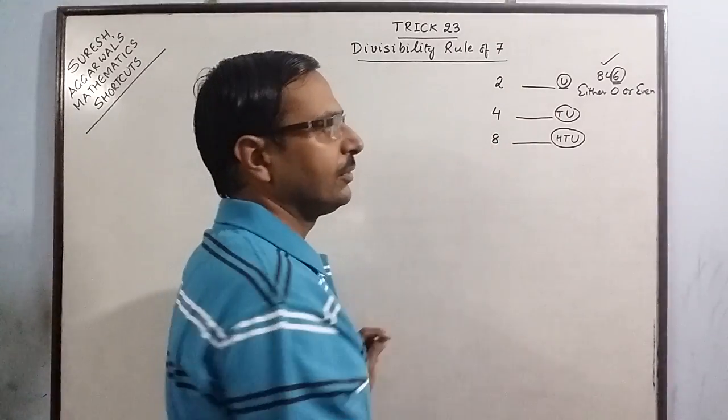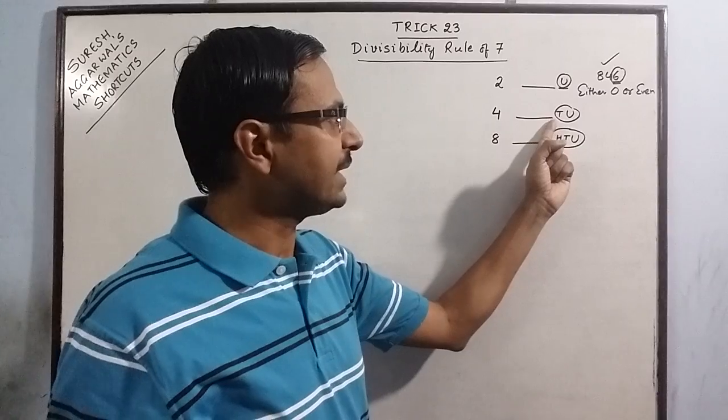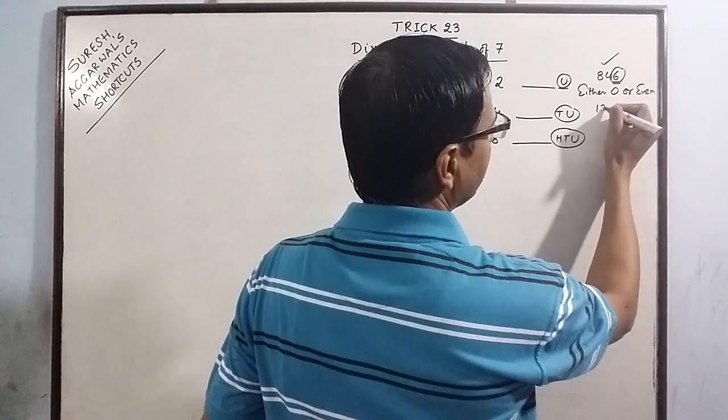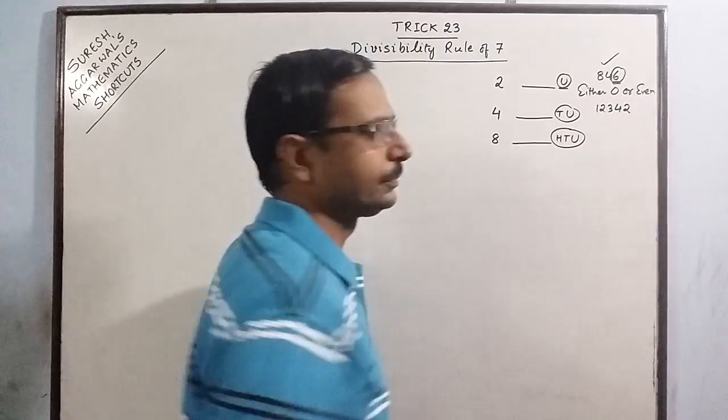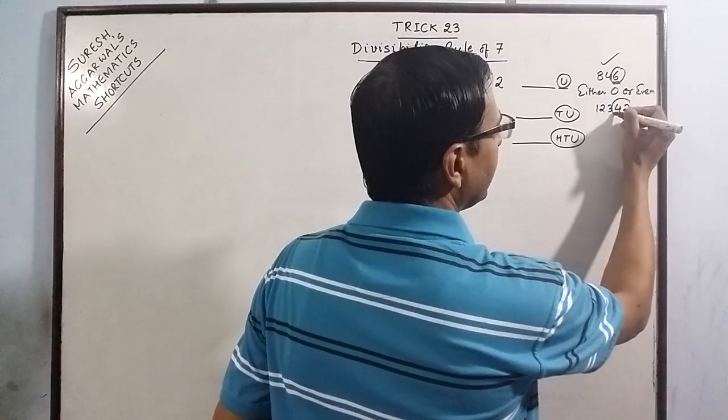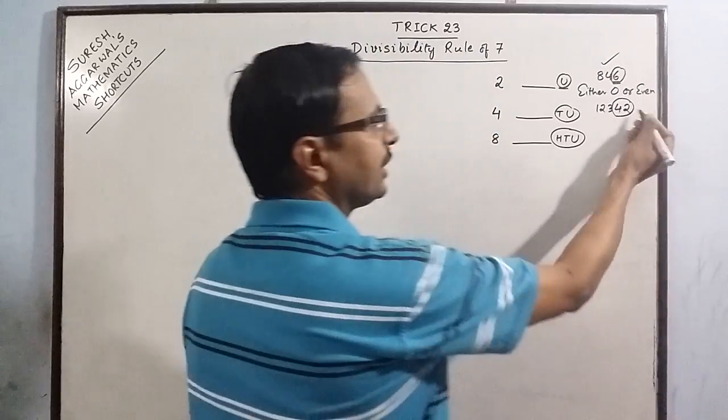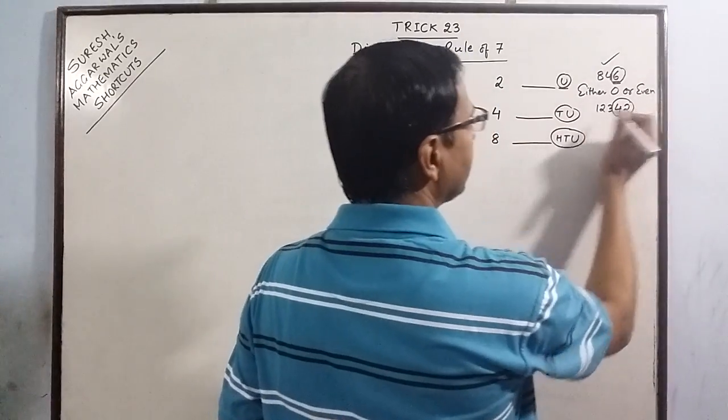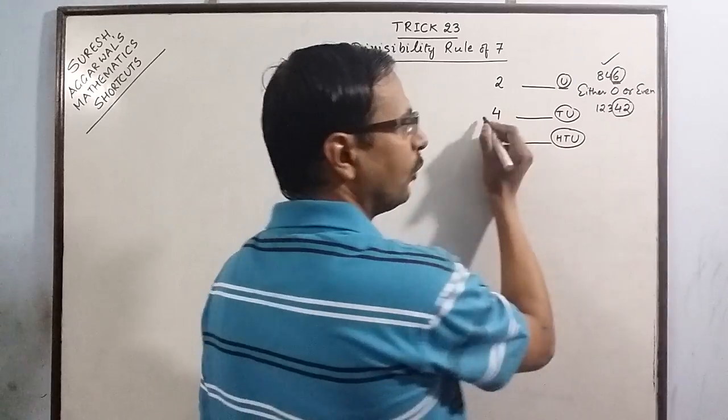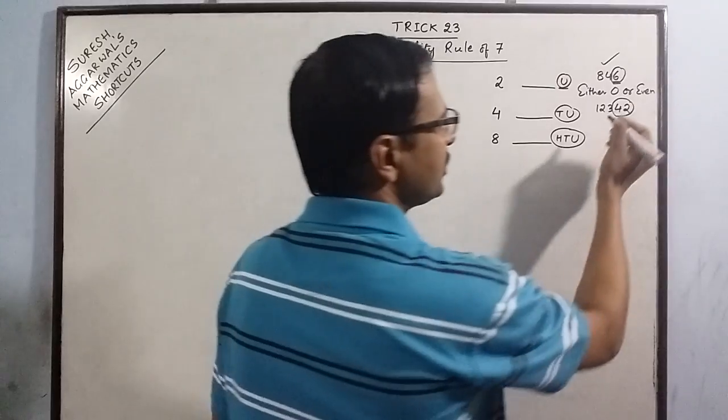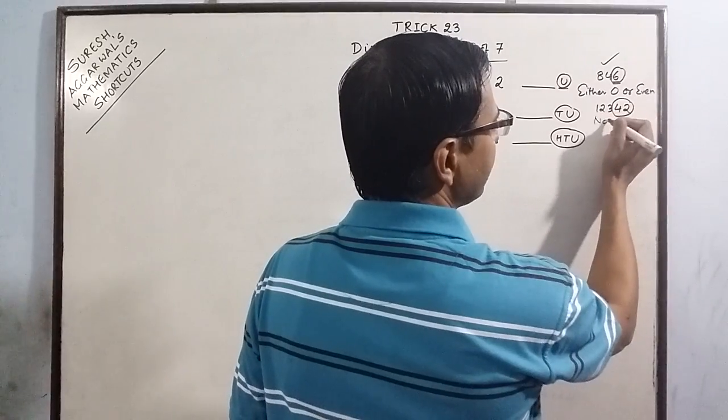For 4, we see the number at the tens and the unit space. For example, suppose we have 12342. Now this number has 42 in the tens and the unit space, and 42 is not divisible by 4, so the entire number is not divisible by 4.